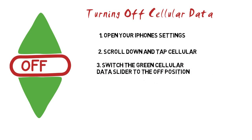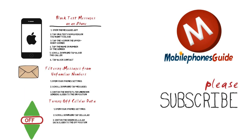Switch the green cellular data slider to the off position. The slider will turn white, indicating that the iPhone will no longer use cellular data. It will be impossible to send or receive text messages using your cell phone plan. Disabling cellular data will also prevent you from receiving voicemail messages or using the personal hotspot function.